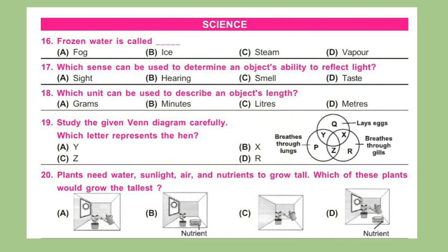This is the Science section. Question 16: Frozen water is called dash. Question 17: Which sense can be used to determine an object's ability to reflect light? Question 18: Which unit can be used to describe an object's length?